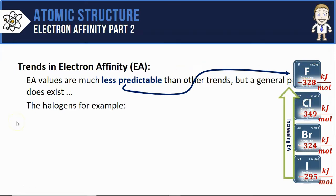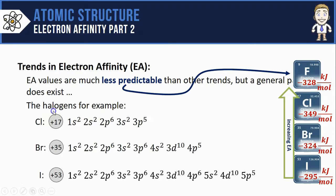We can explain this trend in pretty much the same way we've explained the other trends. Let's analyze the nuclear charge of each of the atoms in the column along with the electron configuration.